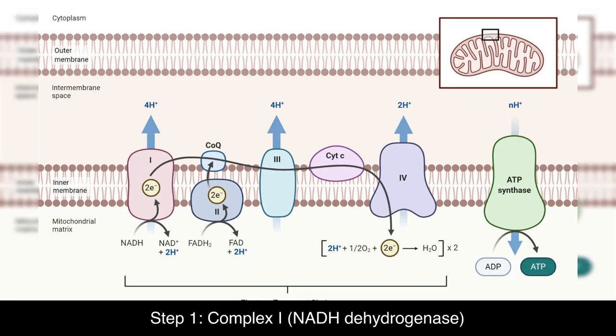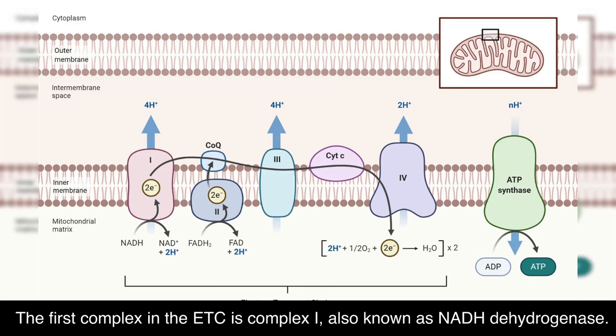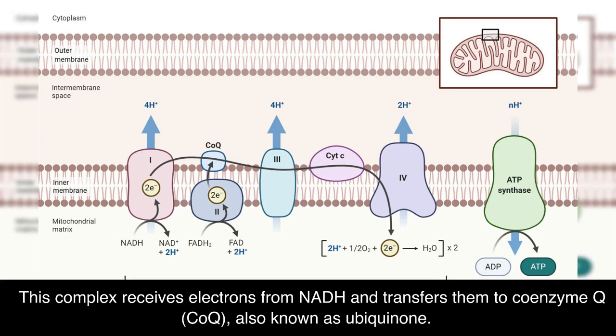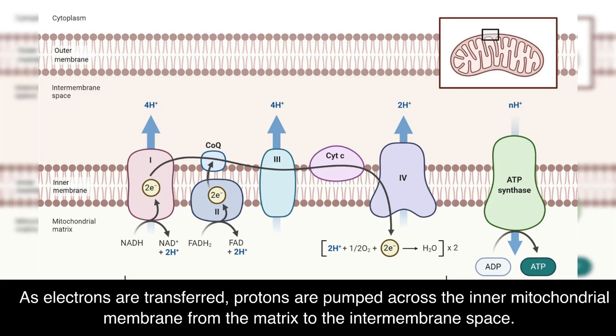Step 1: Complex I — NADH dehydrogenase. The first complex in the ETC is Complex I, also known as NADH dehydrogenase. This complex receives electrons from NADH and transfers them to coenzyme Q (CoQ), also known as ubiquinone. As electrons are transferred, protons are pumped across the inner mitochondrial membrane from the matrix to the intermembrane space.